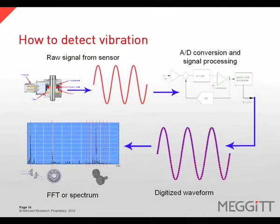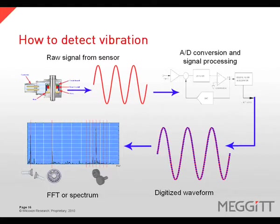Vibration is typically detected using an accelerometer. The accelerometer is comprised of a piezoelectric material that creates a small voltage when excited by vibration. This voltage is the input to a data collection system, typically in millivolts per G. This signal is then digitized and signal processing is performed to provide the desired measurement output, which can be a time waveform, overall vibration measurement, or an FFT.